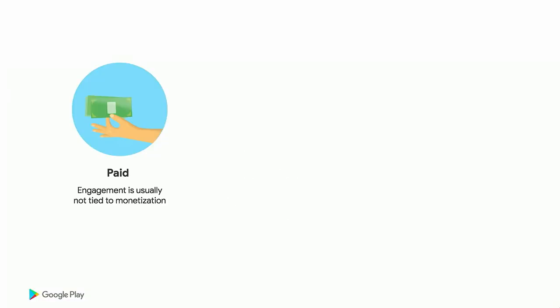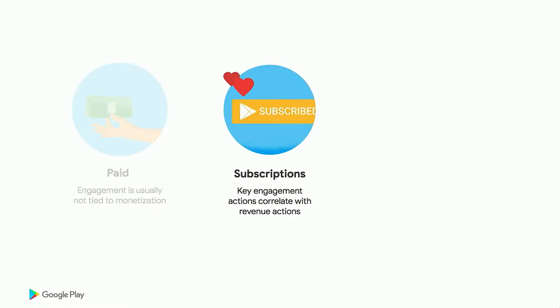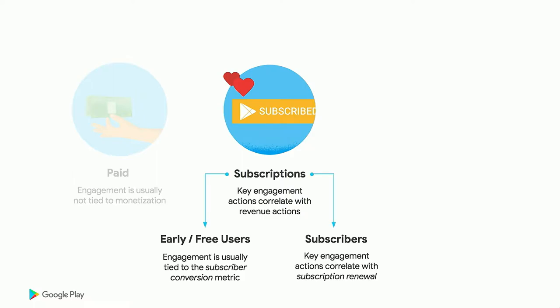For paid apps, engagement isn't going to be tied to monetization, because the user pays for the app up front before any engagement occurs. For subscriptions, key engagement actions are the ones that tie to specific revenue actions. You can break subscription engagements into two types of users. For early or free users, you want to look at the engagement actions that correlate with subscriber conversion — the actions showing they're getting value. If you're a video media app, maybe it's how many videos they view in a day. If you're a news app, maybe it's how many articles or how much time they're spending.